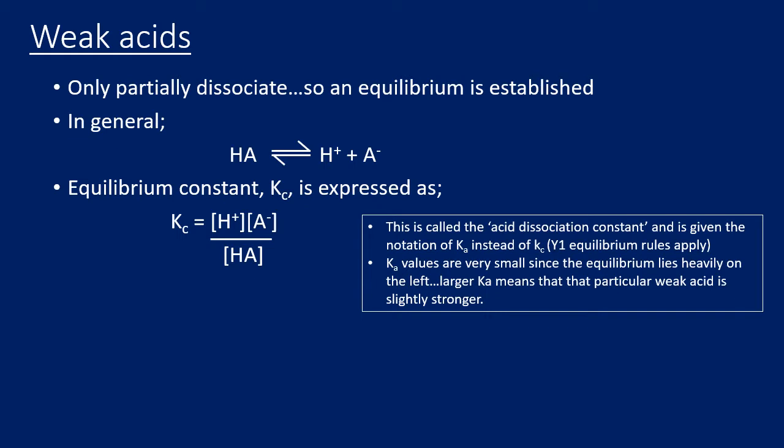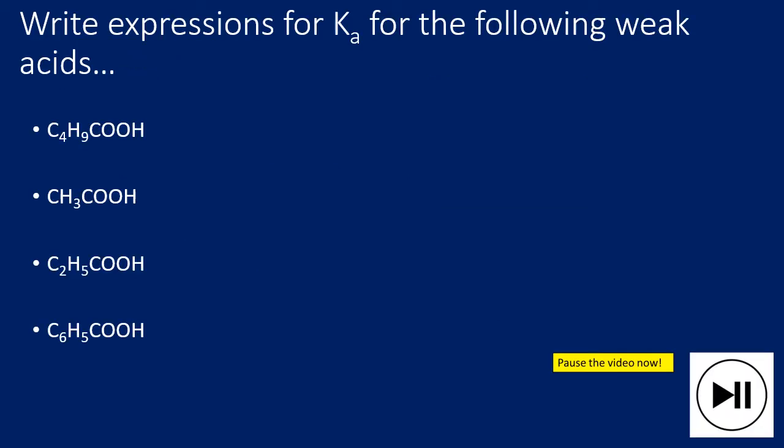Weak acids will have slightly different Ka values from each other because they're not all the same strength — some are weaker than others. The definition of weak means they partially dissociate. If a weak acid has a slightly higher Ka value, that means it's a slightly stronger weak acid. Pause the video and see if you can write expressions for Ka for the following four acids.